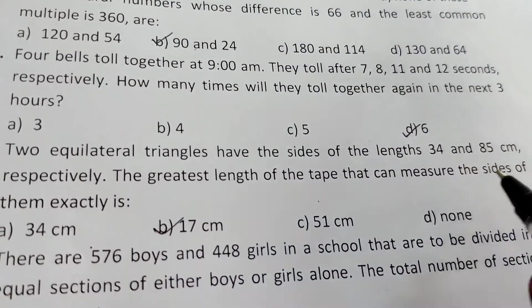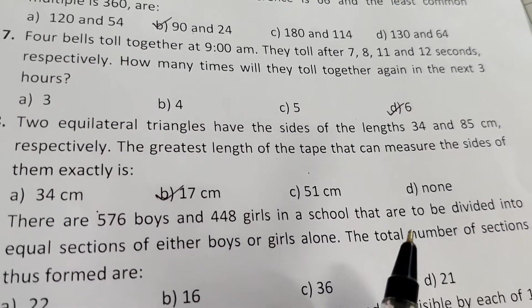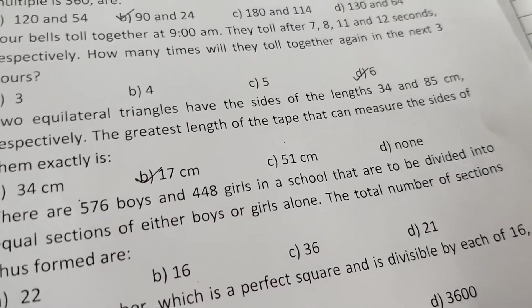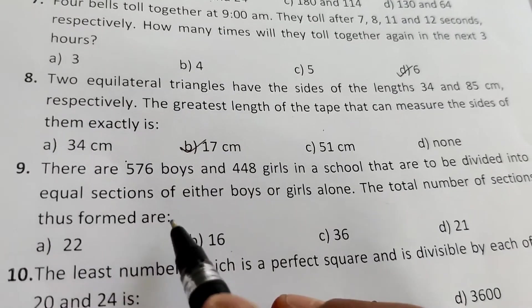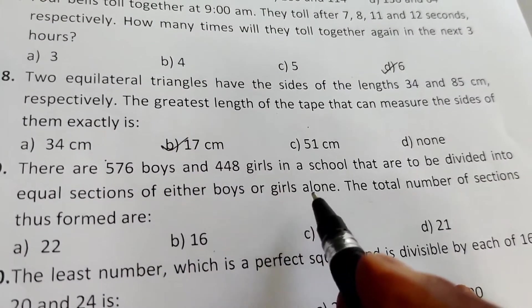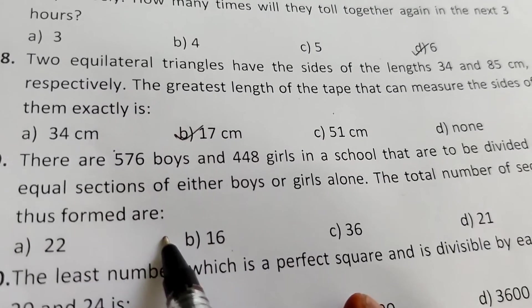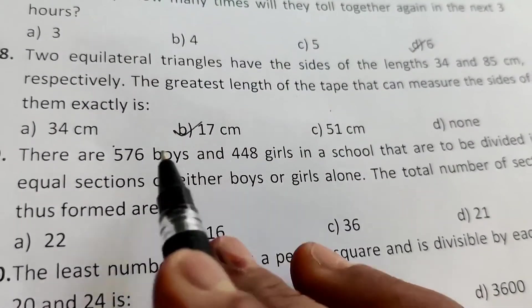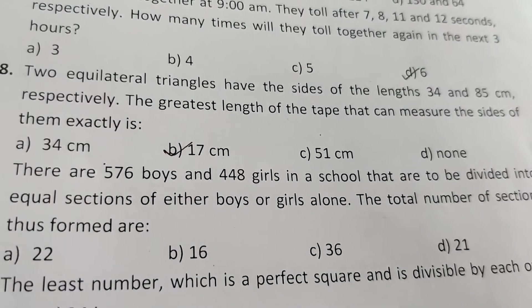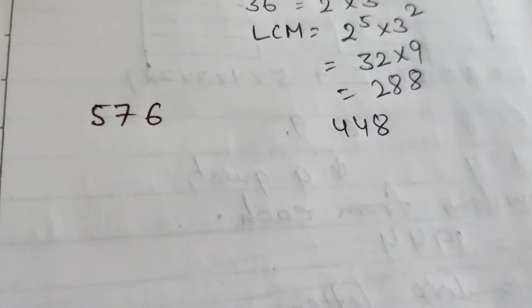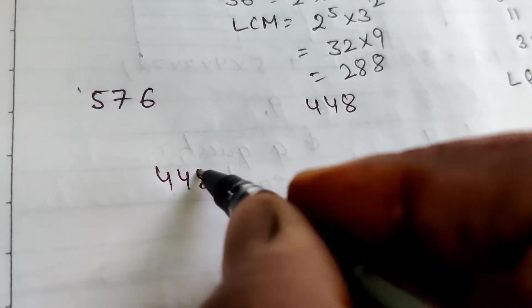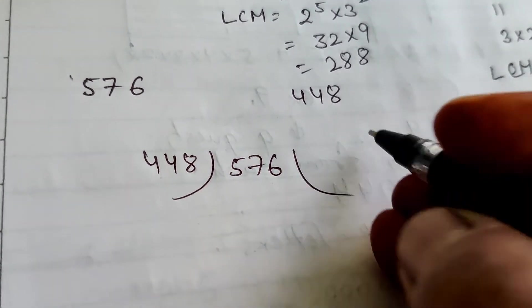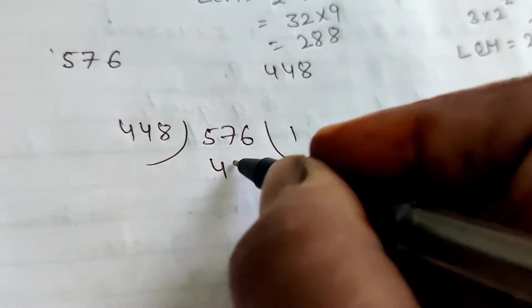Question 9: There are 576 boys and 448 girls in a school to be divided into equal sections of either boys or girls alone. Find the total number of sections. We first find the HCF of 576 and 448 using prime factorization or long division method.